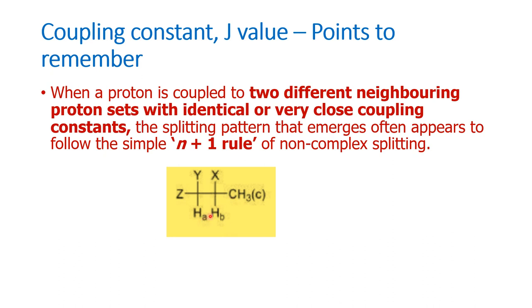The general thing is first, one set of protons will couple and then another set of protons will couple. That is how that would normally happen. But if in case their J values are the same, that is what is written here. When a proton is coupled to two different neighboring proton sets with identical or very close coupling constants, the splitting pattern that emerges often appears to follow the simple N plus 1 rule or non-complex splitting. This is the point that we must remember.